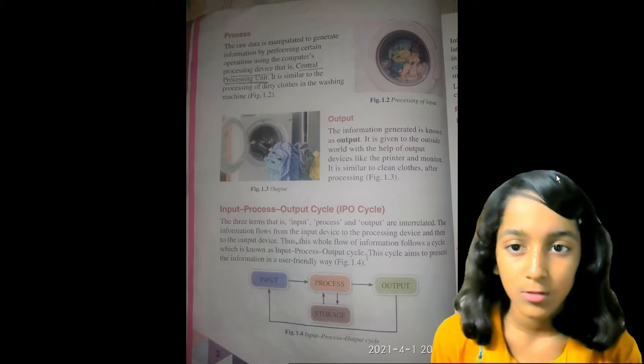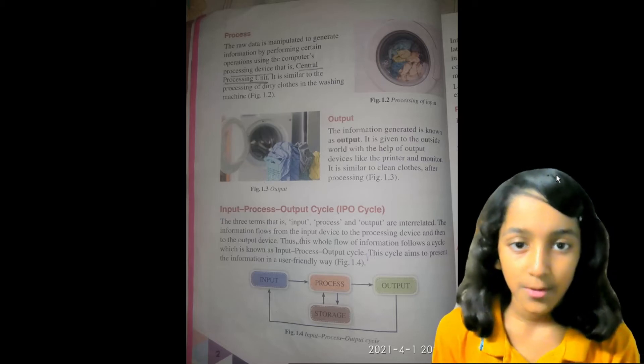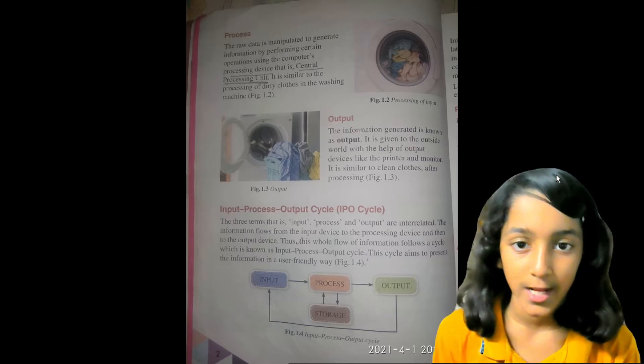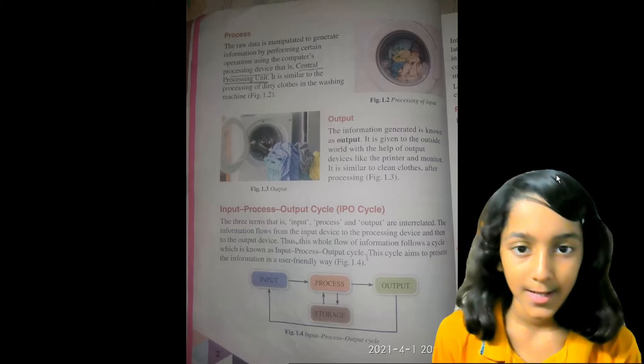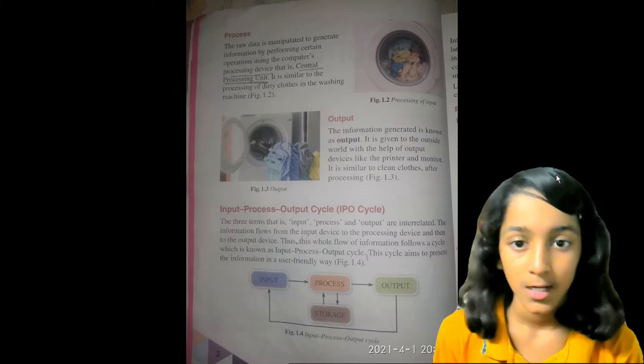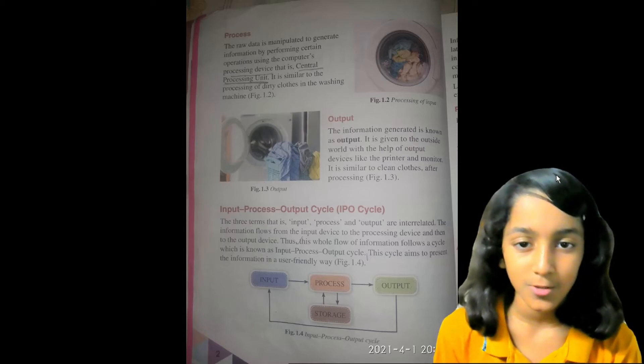It is similar to the processing of dirty clothes in the washing machine. Output: The information generated is known as output. It is given to the outside world with the help of output devices like the printer and monitor. It is similar to clean clothes after processing.